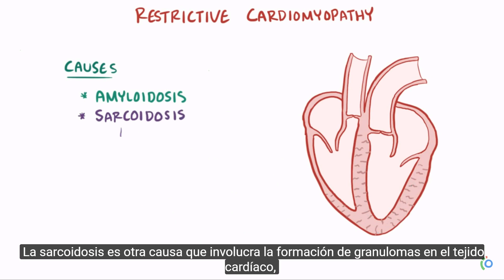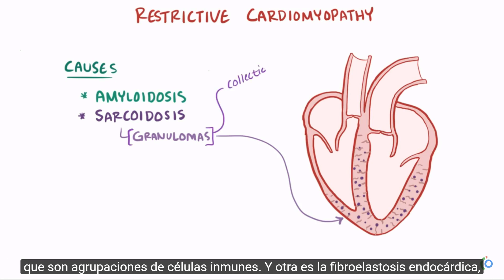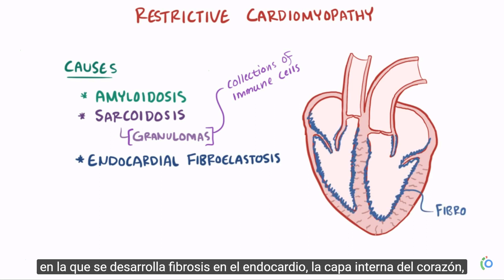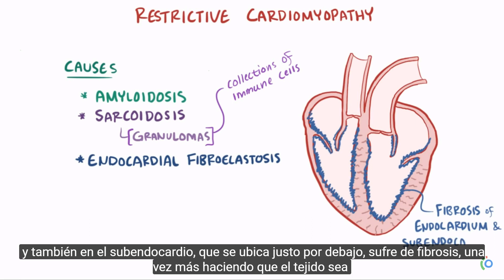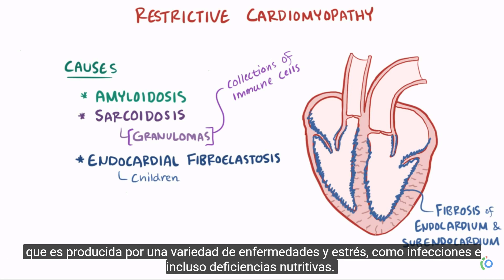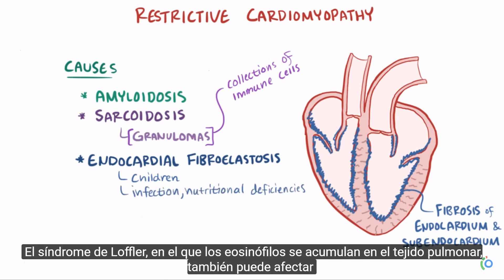Sarcoidosis is another cause that involves the formation of granulomas in the heart tissue, which are these collections of immune cells. Yet another is endocardial fibroelastosis, where fibrosis develops in the endocardium, the inner lining of the heart, as well as the subendocardium right under, again making the tissue less compliant. Endocardial fibroelastosis happens most often in children, and is thought to be caused by a variety of diseases and stresses, like infections and even nutritional deficiencies.